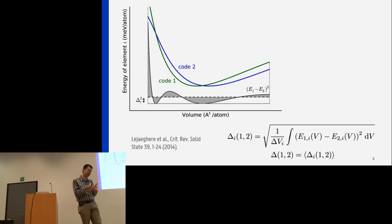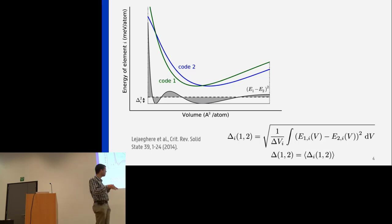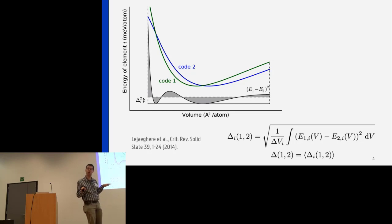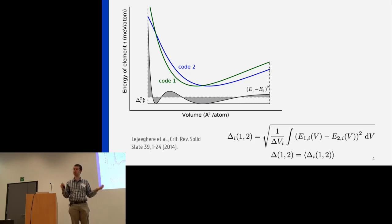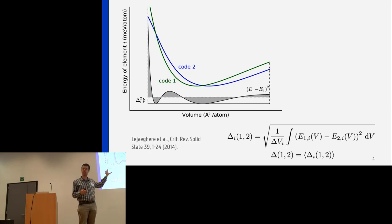Since we have 71 different elemental crystals, we can average that difference over all of the elemental crystals and get one number — one energy distance — which expresses the difference between two codes in terms of equation of state predictions for the elemental crystals.